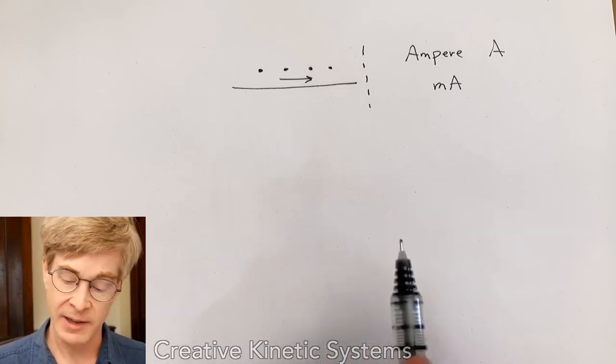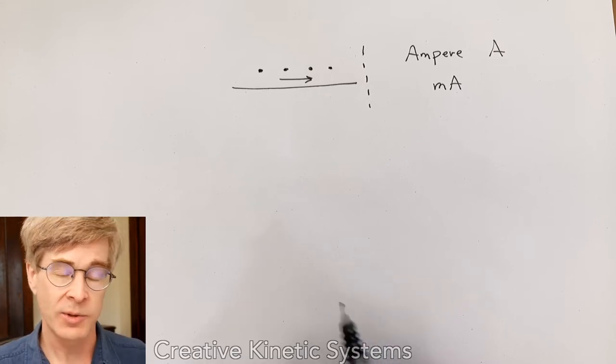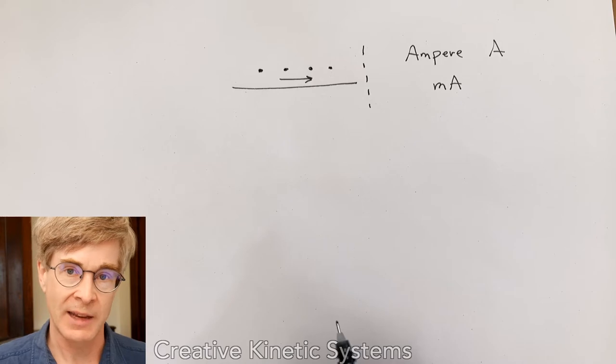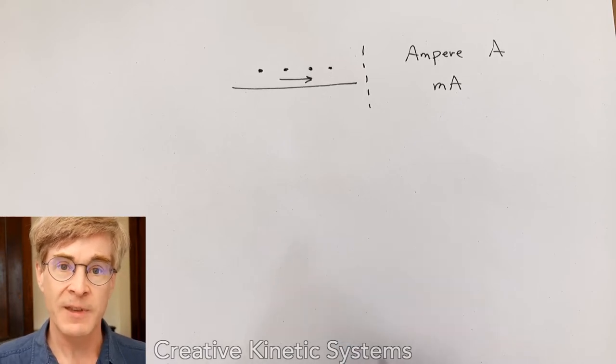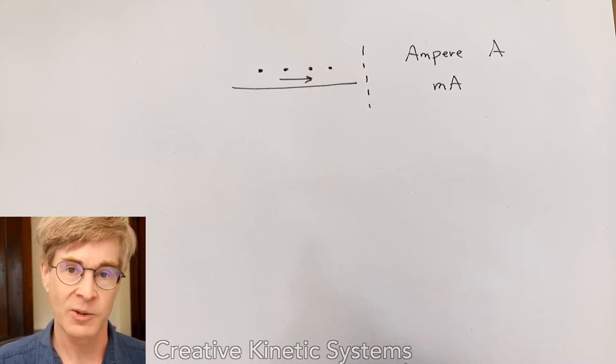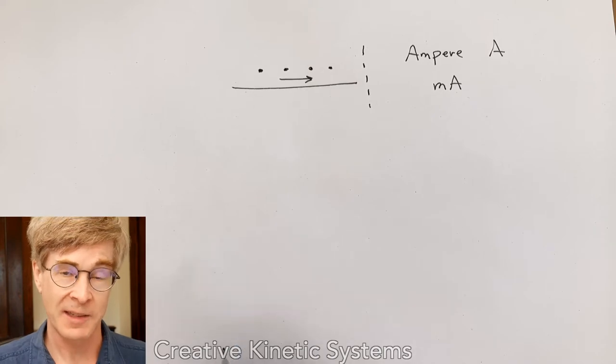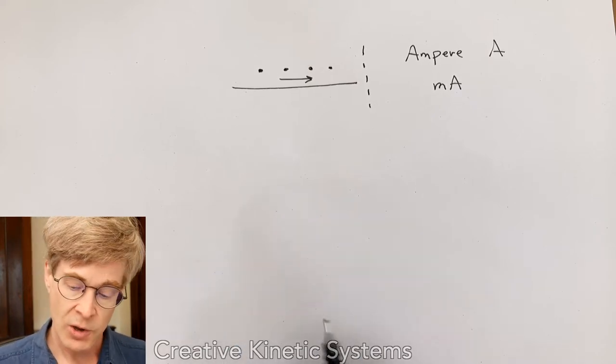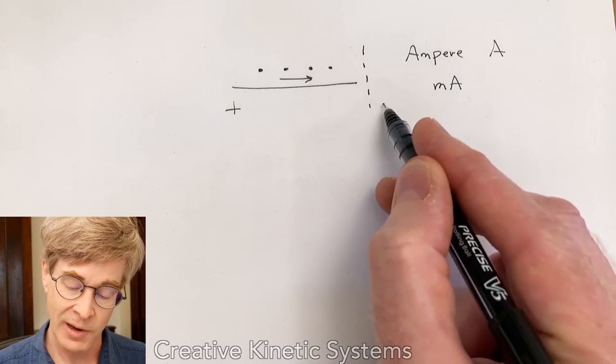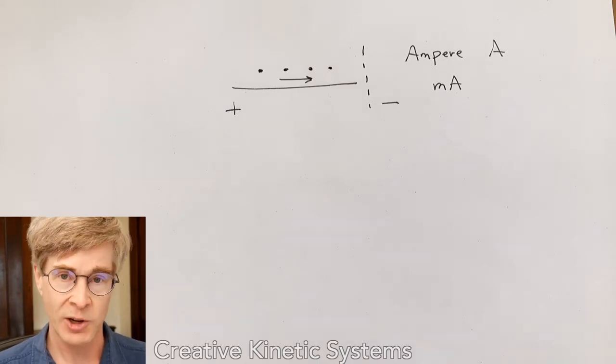Another question you might ask is what makes the current move? What makes the charges move along a conductor or through your circuit? There's several different answers. One could be electric fields—opposite charges attract, like charges repel. So physical forces between particles might create the motion of the currents. Magnetic fields can also induce currents. But this is easiest to understand as electric potential. If one end of a circuit has a positive potential and the other a lower negative potential, then there will be some force induced upon the charges, and they'll move through the circuit.